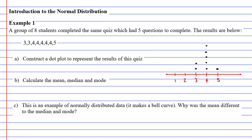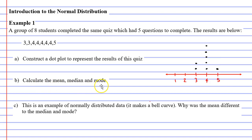When we look at it, we can see that we've got our bell curve. It's not perfectly symmetrical, but it's almost symmetrical. Question B says: calculate the mean, the median, and the mode.